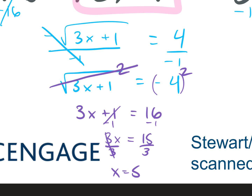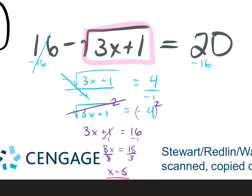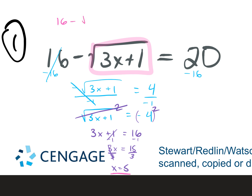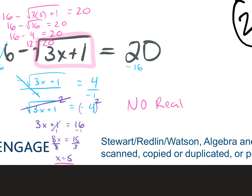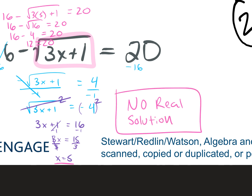Now we check: plug 5 into the original equation. We get 16 minus the square root of 3 times 5 plus 1 equals 20. 3 times 5 is 15, plus 1 is 16. The square root of 16 is 4. And 16 minus 4 is 12. Does 12 equal 20? No. So our answer here is no real solution.